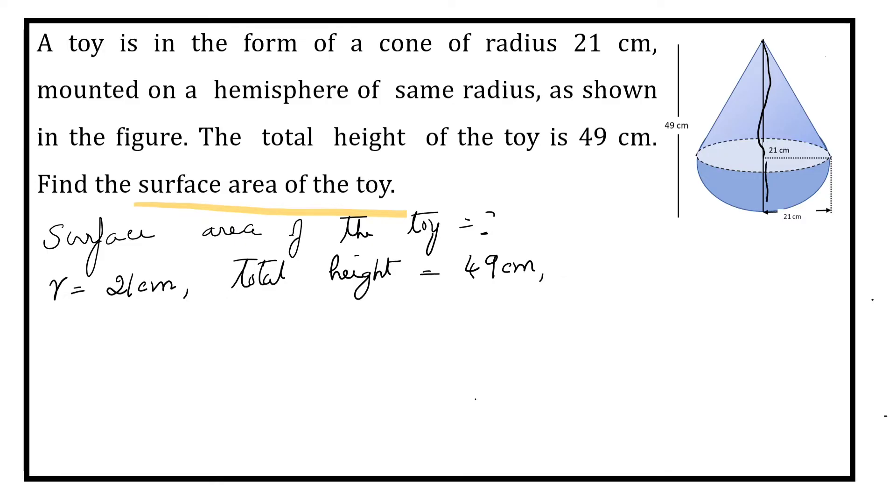We know this length is 21 cm. This is also radius of the hemisphere. This is equal to this one. So total length is 49 minus 21. It is equal to 28 cm.